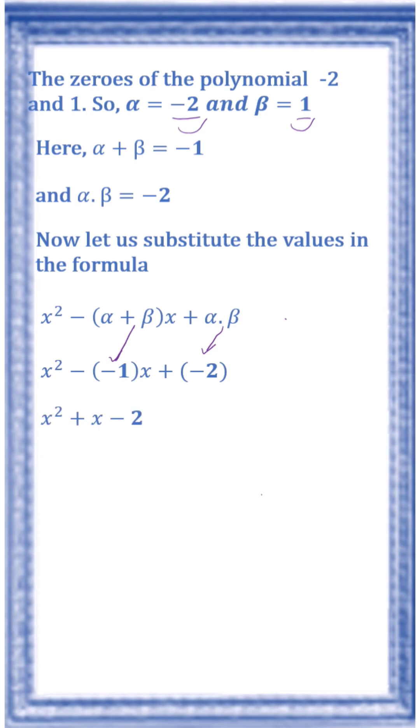x² minus into minus, that is plus. Plus into minus, that is minus. So, x² plus x minus 2 is the required polynomial. I hope you have all understood the problem as well as the concept also.